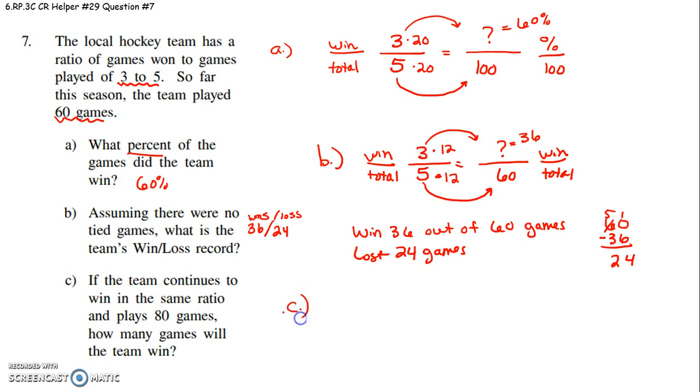Letter C. If the team continues to win in the same ratio and plays now 80 games total, how many games will they win? So we'll do win to total equals win to total. I use my fact that they win three out of every five games. And now I'm wondering how many will they win out of 80. What's 80 divided by 5?